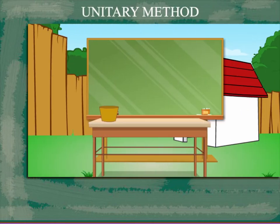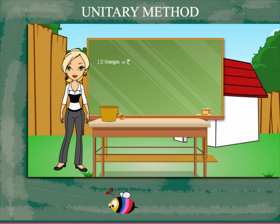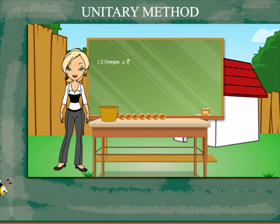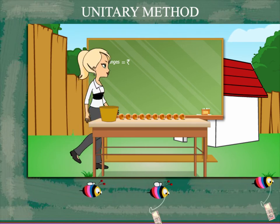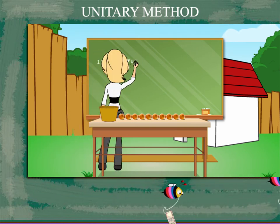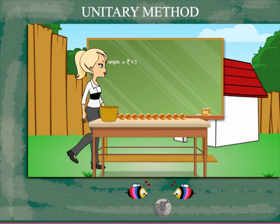Unitary method: Teacher Rosie is in her backyard with oranges on her table. Ten oranges cost rupees 45. Rosimam wants to know the cost of four oranges that she has picked.